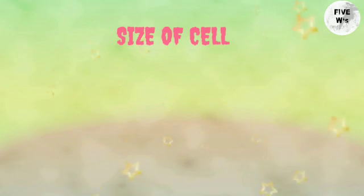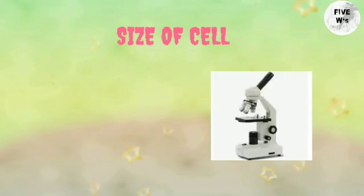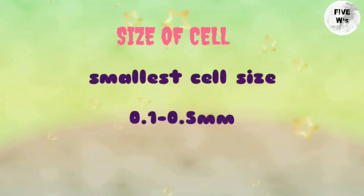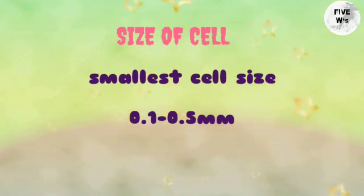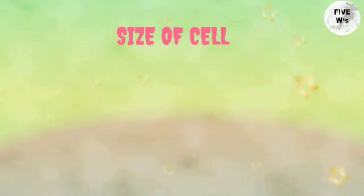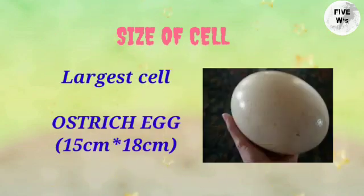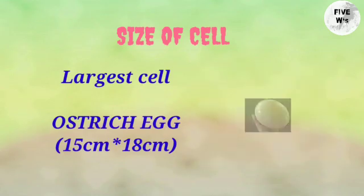Size of cell: cells are very tiny and often cannot be seen with the naked eye, so we use a microscope to magnify them. The smallest cell size varies between 0.1 to 0.5 micrometers. The largest cell is an ostrich egg, which is about 15 centimeters long and 18 centimeters wide.